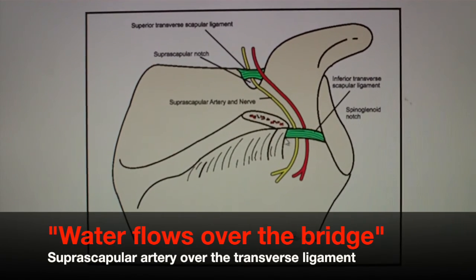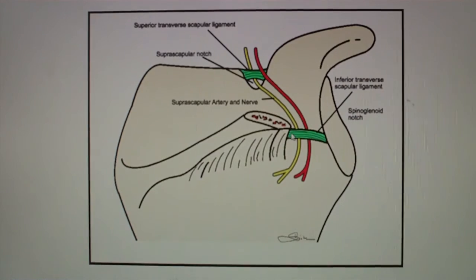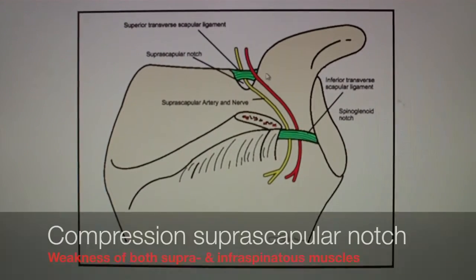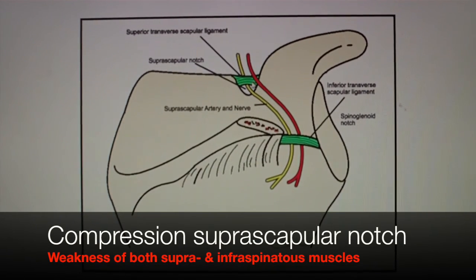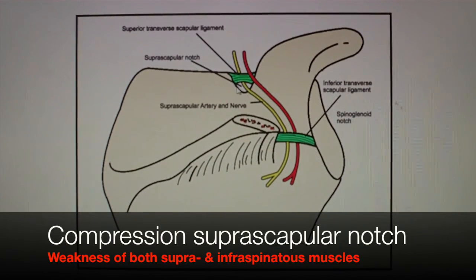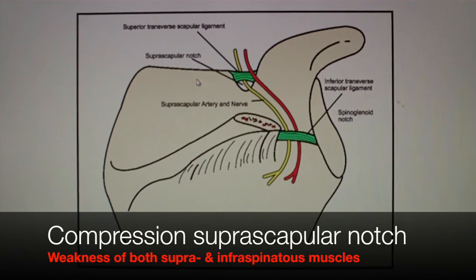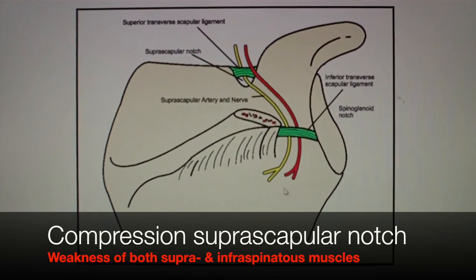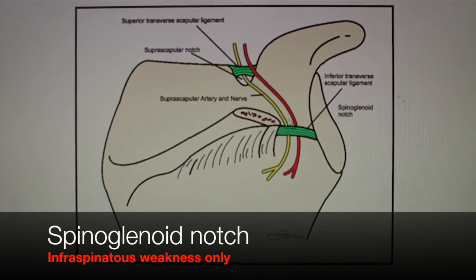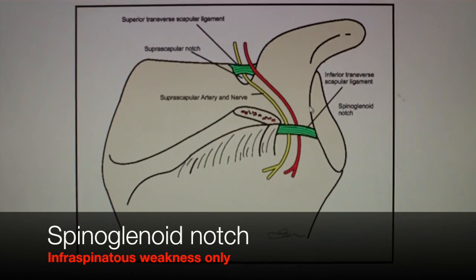At the spinoglenoid notch, this is covered by the inferior transverse scapular ligament, and both the suprascapular nerve and artery pass under this. The suprascapular nerve can be compressed at either site. Compression at the suprascapular notch, which can be through a ganglion, causes weakness of both the supraspinatus and infraspinatus muscles. Compression at the spinoglenoid notch, which is often associated with cysts from posterior labral tears, causes weakness of the infraspinatus only.